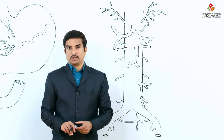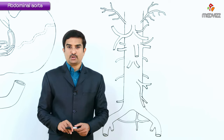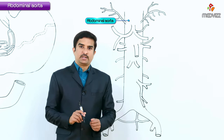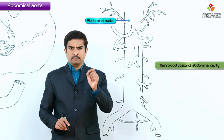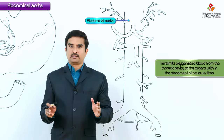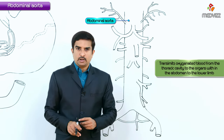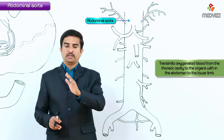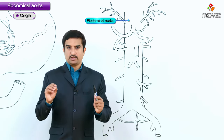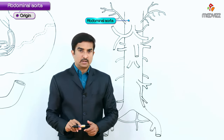In today's lecture we are going to discuss the abdominal aorta gross anatomy. The abdominal aorta is the main blood vessel of the abdominal cavity that transmits oxygenated blood from the thoracic cavity to the organs within the abdomen and to the lower legs.